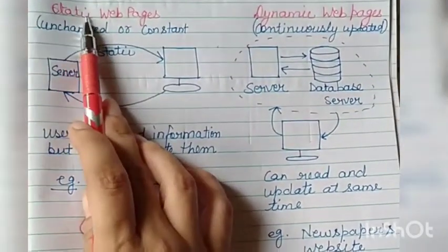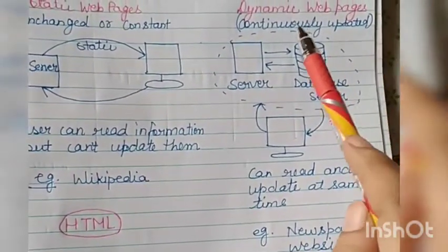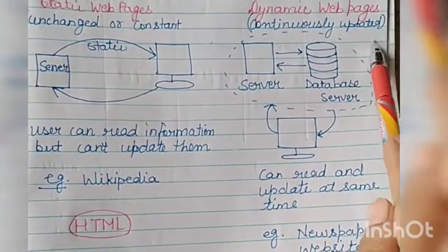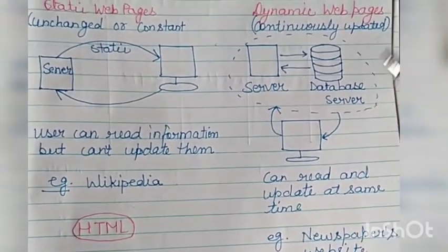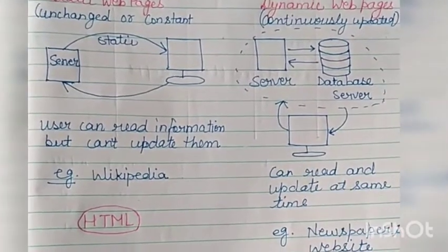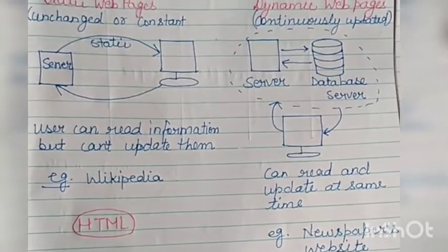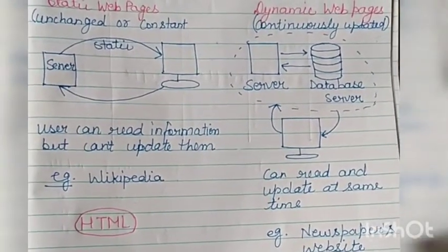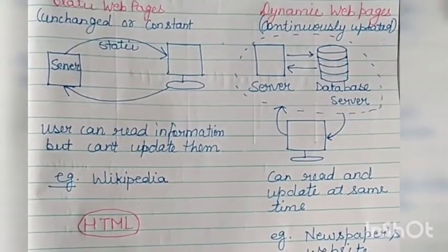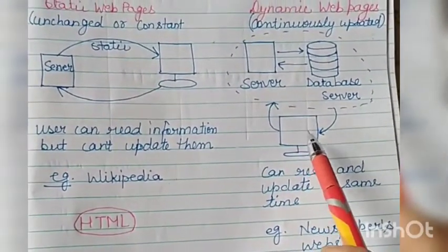The web pages you develop on your computer are called static web pages. Now let's come to dynamic web pages. Dynamic web pages are those web pages which are continuously updated. The information on them continuously keeps updating. If you open it today you see some information, and the next day you open it you see different information — it continuously keeps updating.